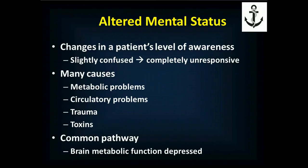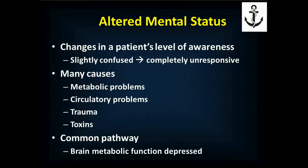Altered mental status is a term without a specific definition, but there's a general concept: any change in a patient's level of awareness. This can be a patient who's slightly confused or a patient who's completely unresponsive in a coma. In some ways in medicine, we're actually more concerned with the mild cases, not because of the degree of illness, but because it's very easy to identify the patient who's completely unresponsive. Unfortunately, it's easy to miss subtle signs of changes in mental status, which can also be a sign of a significant underlying disease. There are a lot of causes — metabolic problems, particularly diabetes, circulatory problems, trauma, and toxic materials.